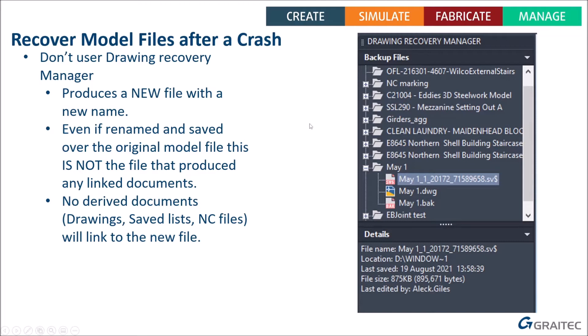Using the Drawing Recovery Manager always creates a brand new file — it does not recover a previous file. It always counts as a new file, so even if you clicked on May1.dwg it becomes May1_Recover.dwg, not May1. Even if you do a Save As back to May1.dwg, it wasn't the original file. If it's not the original file, you will never be able to link it to any existing documents — all those drawings you were editing, you'll never be able to link the new model to them. So whatever you do, don't touch the Drawing Recovery Manager.